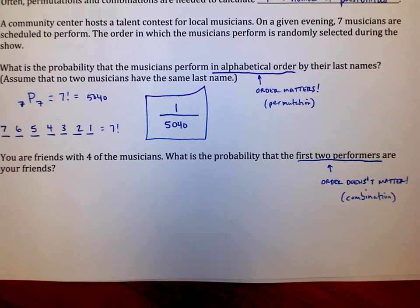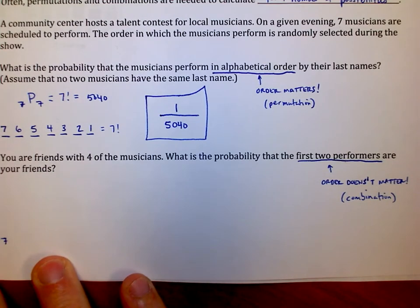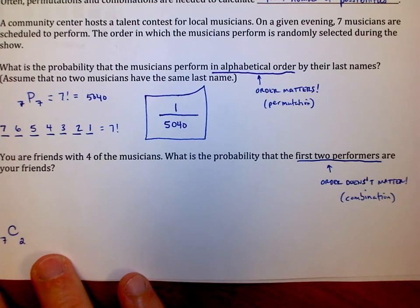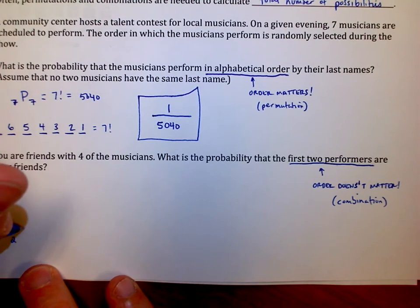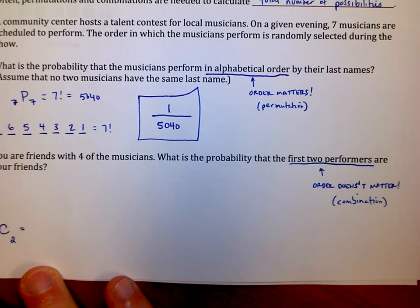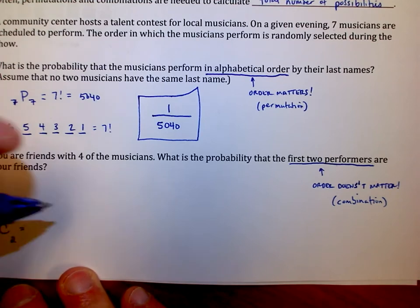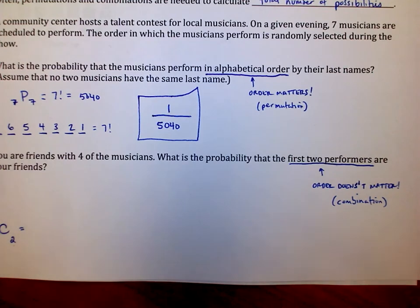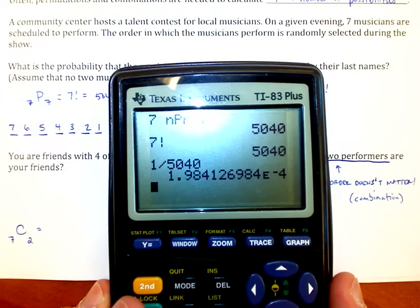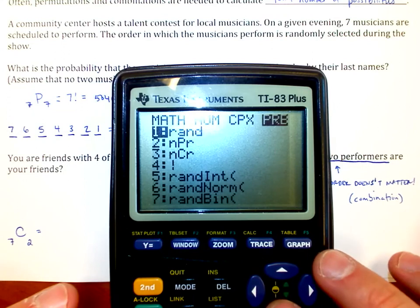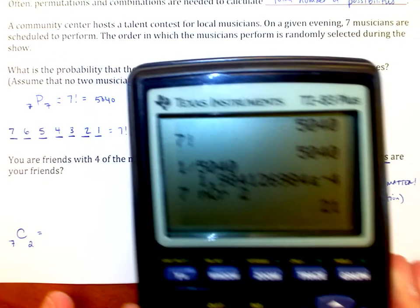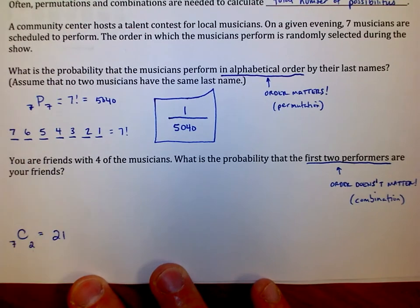Total number of possibilities: I have seven musicians to choose from and order doesn't matter, and I'm interested in two of them being chosen—the first two. So if I do 7 NCR 2, that's going to calculate the total number of possibilities that I have for the first two out of the seven musicians. That's going to tell me what I need for the bottom of my fraction. So on my calculator, I'm going to do 7, math menu, NCR 2. That tells me I have 21 different possibilities that I could have.